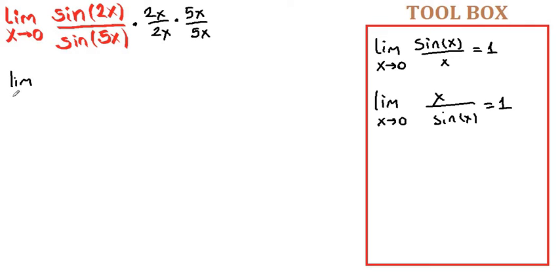Limit as x approaches zero. We can arrange sine of 2x and then 2x from here and we can rearrange sine of 5x and 5x.